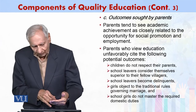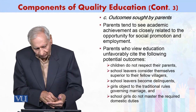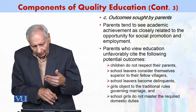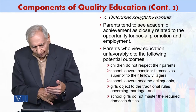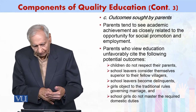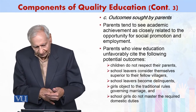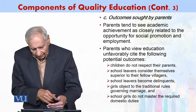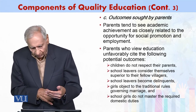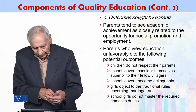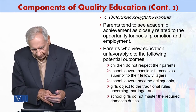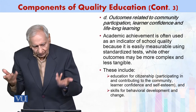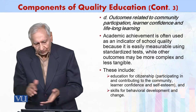Parents who view education unfavorably cite the following potential outcomes: children who do not respect their parents, school leavers who consider themselves superior to their fellow villagers, school leavers who become delinquents, girls who object to traditional rules governing marriage, and school girls who do not master the required domestic duties. These are the common negative perceptions some people hold.